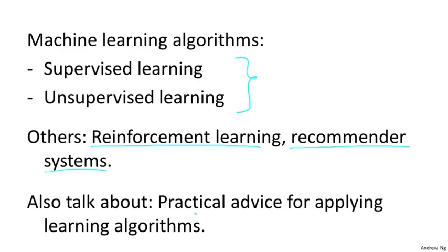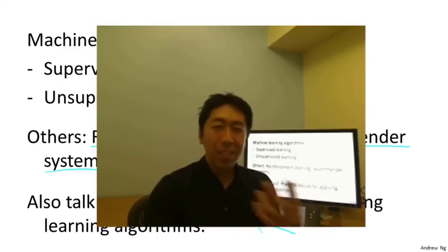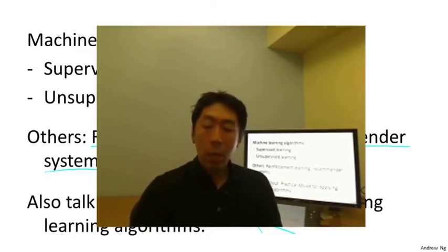One of the other things we'll spend a lot of time on in this class is practical advice for applying learning algorithms. Teaching about learning algorithms is like giving a set of tools — but equally important, or more important, than giving you the tools is teaching you how to apply them. I like to make an analogy to learning to become a carpenter: if someone gives you a hammer, a screwdriver, and a saw and says 'good luck,' that's no good. There's a huge difference between people who know how to use these machine learning tools versus people who don't.